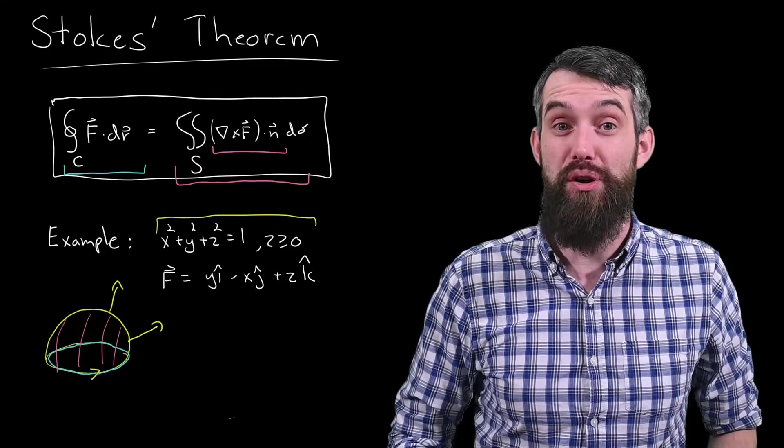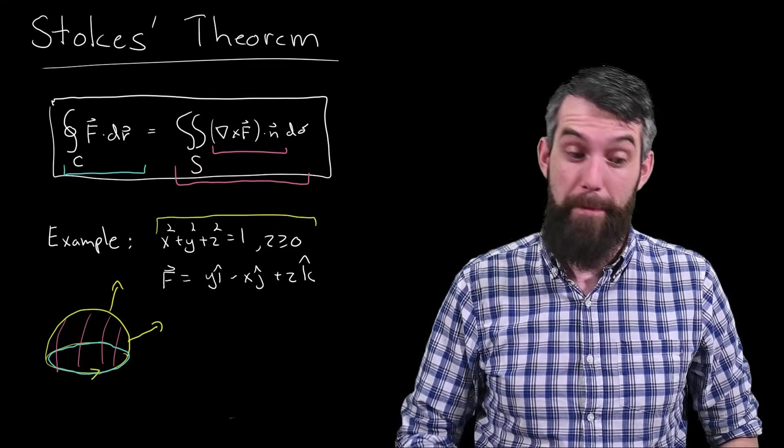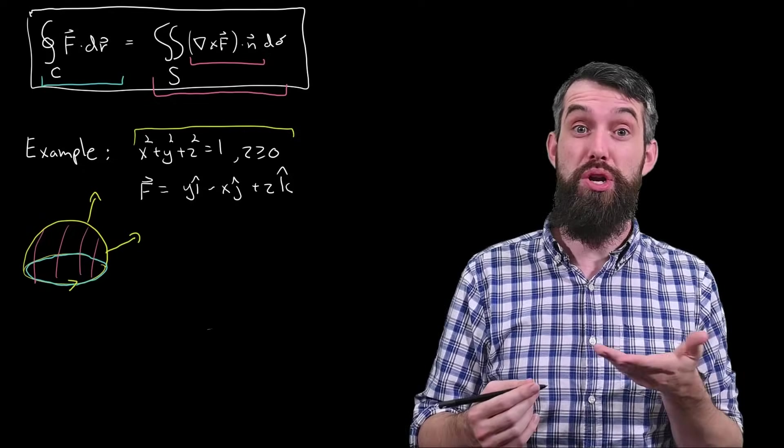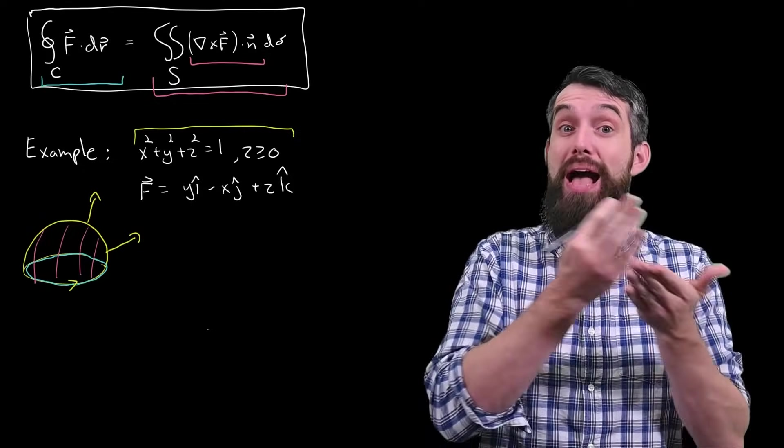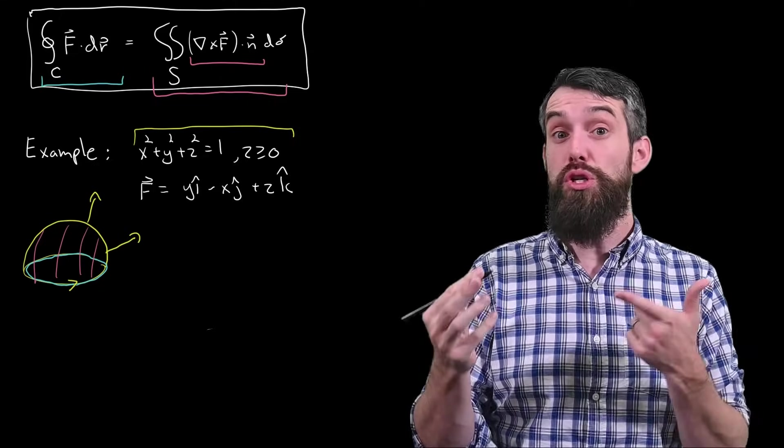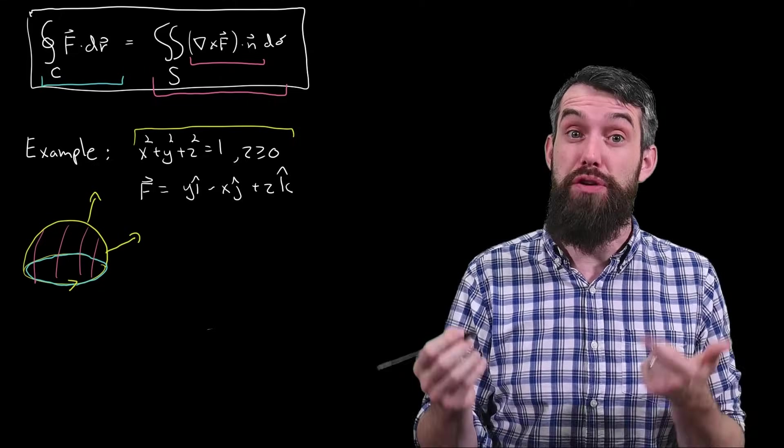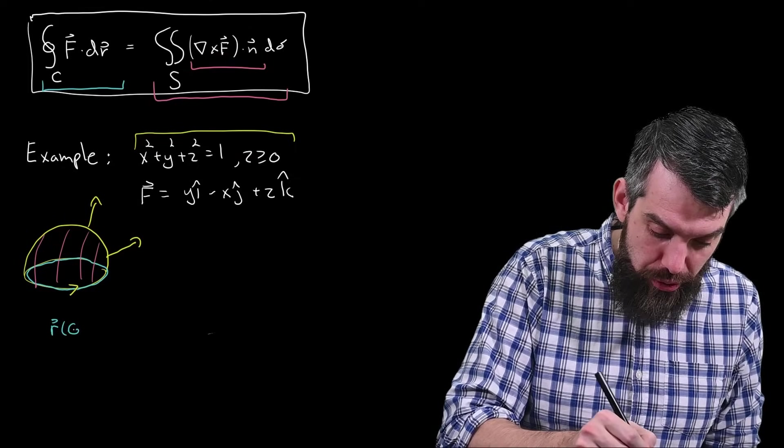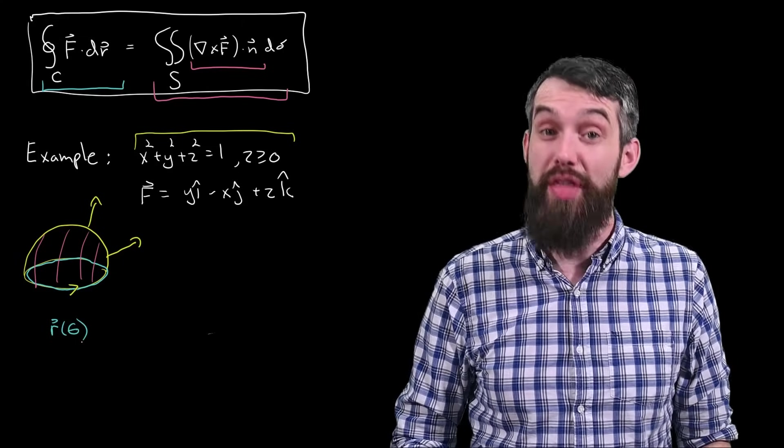Okay, so which side should we do first? How about the left side, the circulation? The question of what is the circulation along this boundary curve of this field is a problem we could have done back earlier in the course. And indeed the most important thing is to come up with a parameterization for the curve. So I'm going to do that.